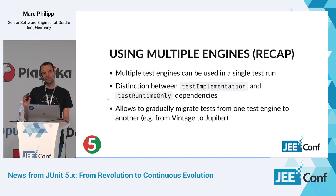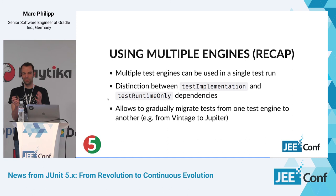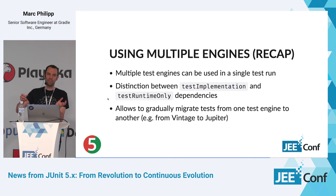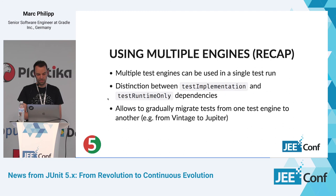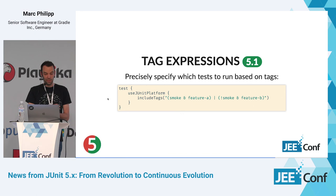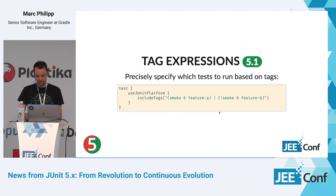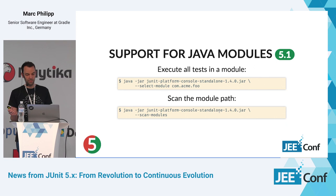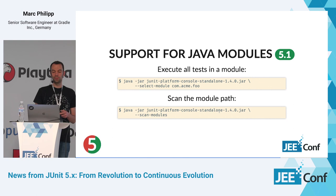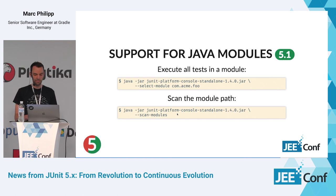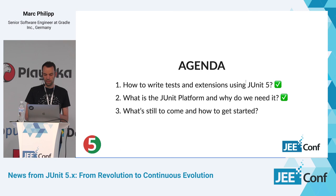In 5.1 we added tag expressions — a sophisticated expression language you can use in your IDE or build tool to select which tests to execute, supporting OR, AND, and negation. We also support Java modules since 5.1: you can execute all tests in a module or scan the module path using the console launcher standalone JAR.